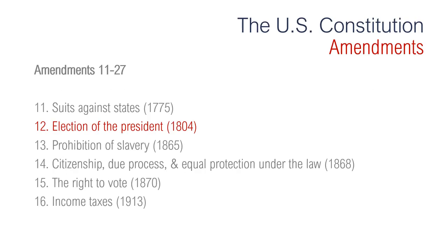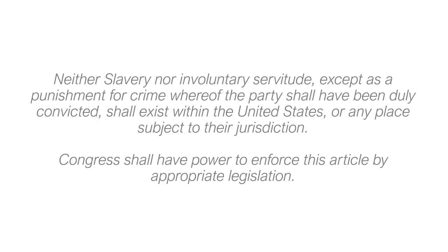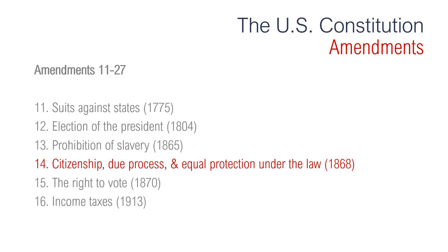The 12th Amendment is regarding the election of the president — this amendment changed the procedure by which presidents and vice presidents are elected and the ballots on which they are elected. The 13th Amendment is about the prohibition of slavery and it was passed in 1865. It says neither slavery nor involuntary servitude, except as a punishment for crime whereof the party shall have been duly convicted, shall exist within the United States or any place subject to their jurisdiction. Some slaves had been freed during the Civil War and this amendment freed the others and completely abolished slavery from the United States.